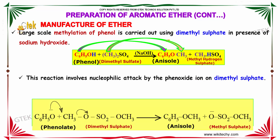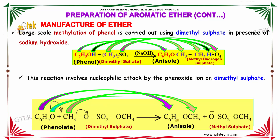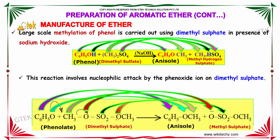For large-scale manufacturing of ether, methylation of phenol is carried out using dimethyl sulfate in the presence of sodium hydroxide. This reaction involves nucleophilic attack by the phenoxide ion on dimethyl sulfate. The phenolate reacts with dimethyl sulfate to form anisole and methyl sulfate.